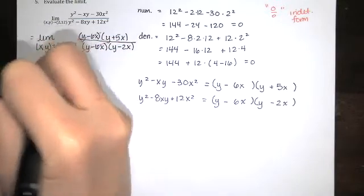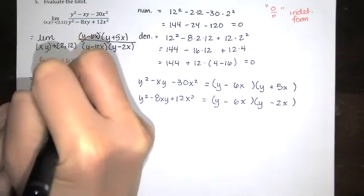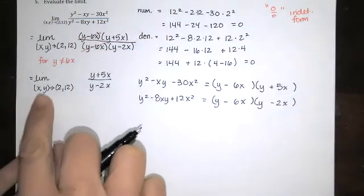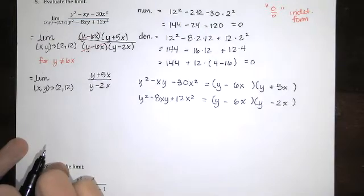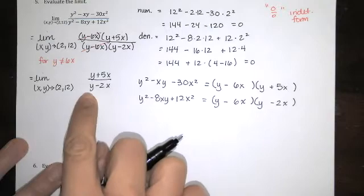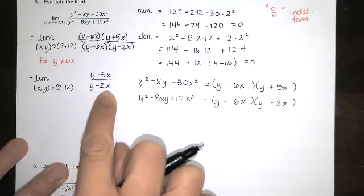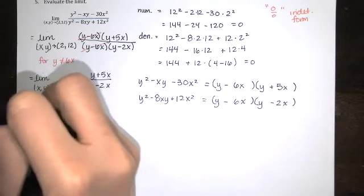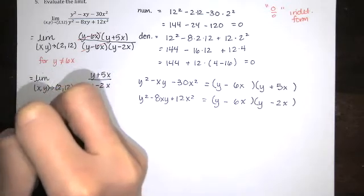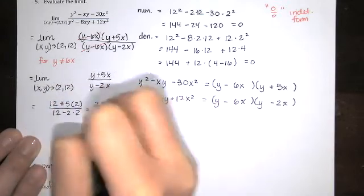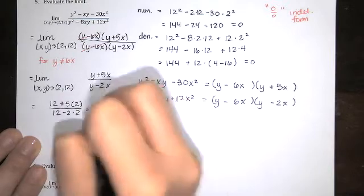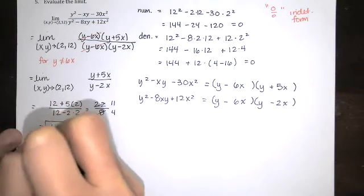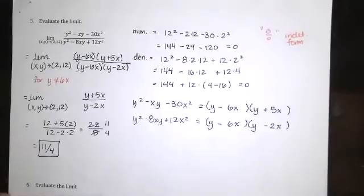Now we have the limit as x, y approaches 2, 12 of y plus 5x over y minus 2x. And our question is now, if I plug in 2, 12, is this function well defined? Well, if y is 12, x is 2, I have 12 minus 4. So that's going to work out just fine. So this function is continuous at 2, 12. So we'll just substitute in 12 for y and 2 for x. So I end up with 22 over 8. Divide the numerator and denominator by 2. And I get 11 over 4.